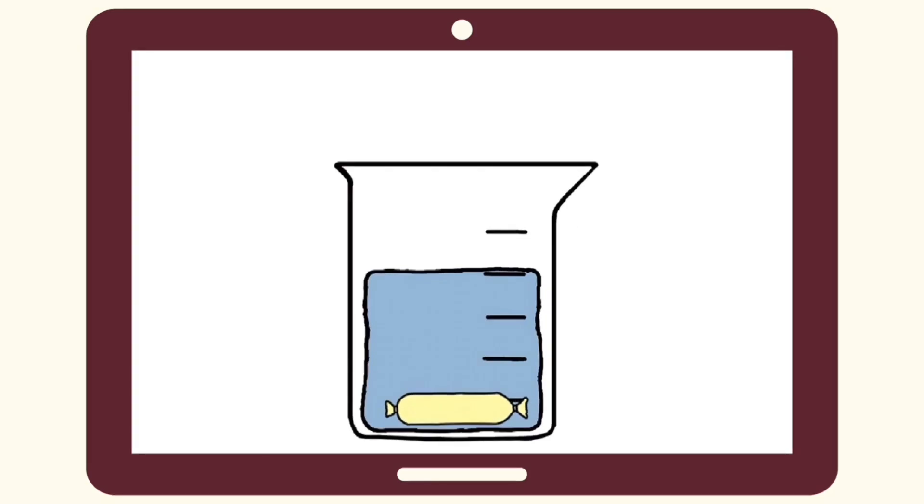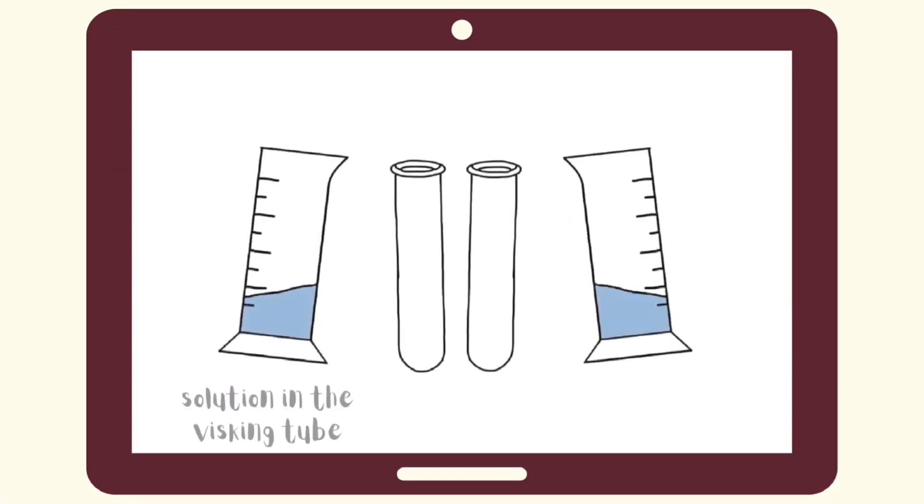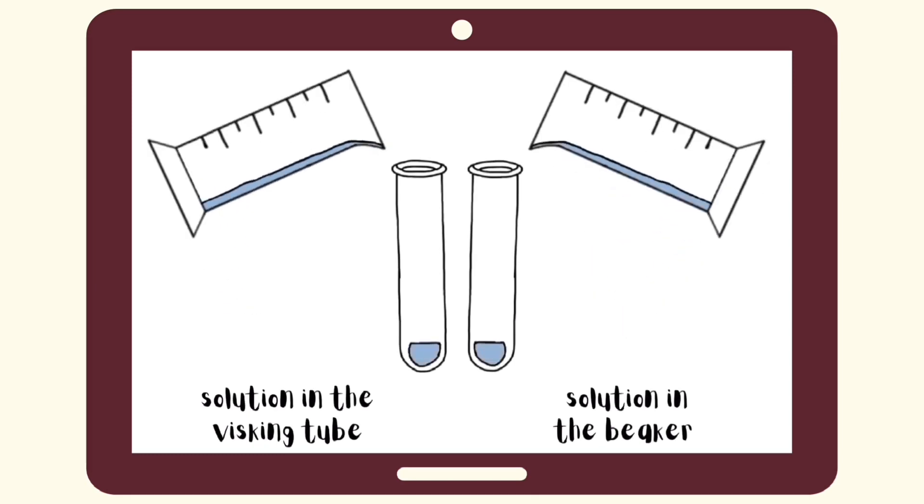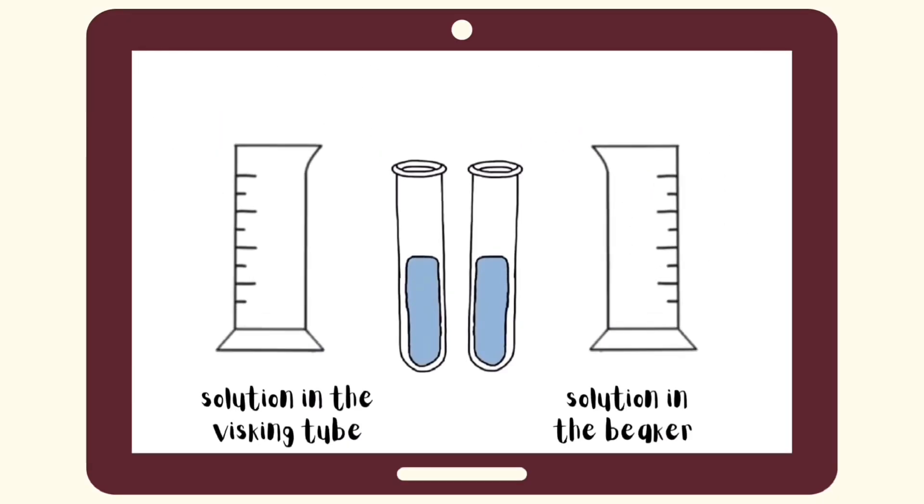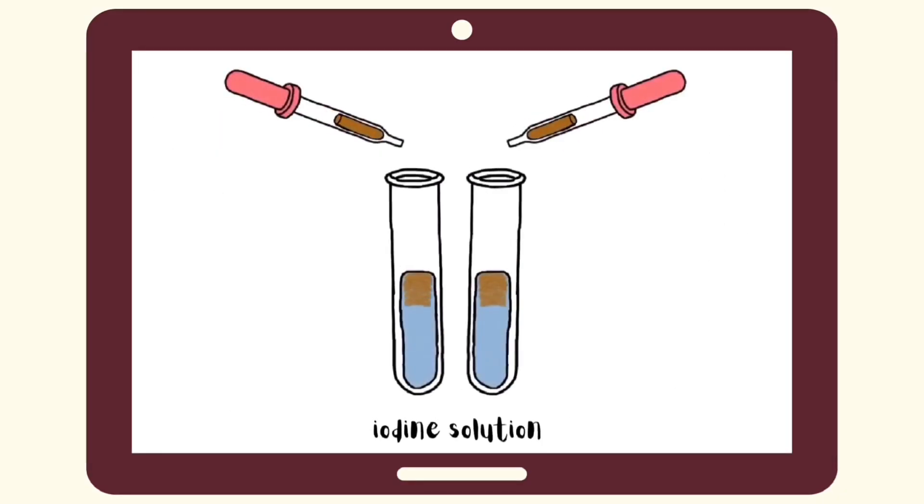After 30 minutes, remove and transfer the visking tubing into a dry beaker. Then, conduct the iodine test for the solutions in the visking tubing and in the beaker. Put 2ml of each solution in separate test tubes and add 1ml of the iodine solution. Observe the color produced.